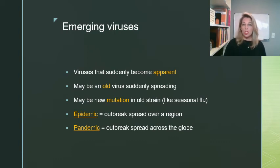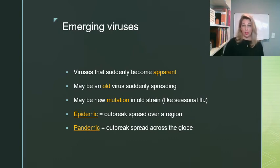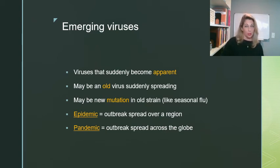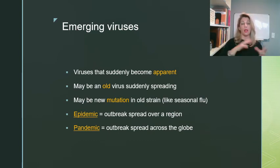Emerging viruses are ones that have suddenly become apparent — it might be an old virus that is suddenly spreading, or a new mutation in an old strain like the seasonal flu. Every year we get a new version of the flu vaccine because there are different versions of the flu mutating over time. An epidemic applies to an emerging virus that has spread over a particular region. A pandemic, however, means it's the whole globe — when a pandemic happens, the whole globe is experiencing an epidemic at the same time.